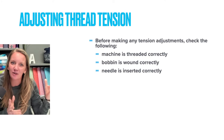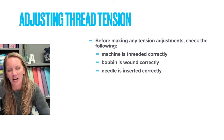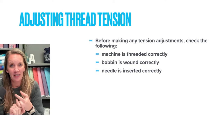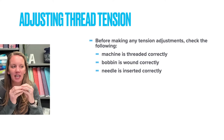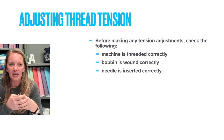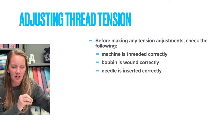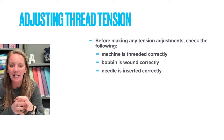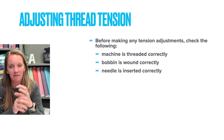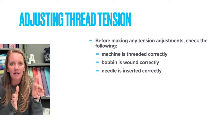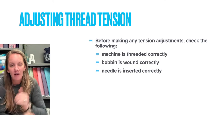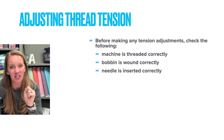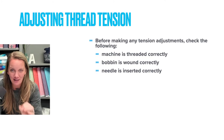Make sure your bobbin is wound correctly — this is kind of the wild card. If you notice your tension is good, bad, good, bad no matter what you do, check your bobbin. That bobbin should be wound tightly and smoothly. If there's any squishiness to it, or if it looks kind of like a cone rather than winding evenly, it's not going to feed consistently and you'll get inconsistent tension that will drive you nuts.